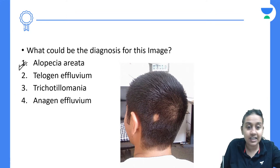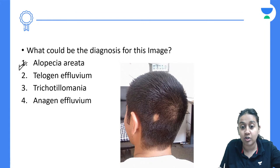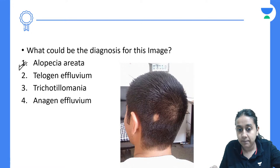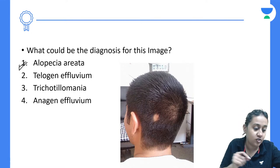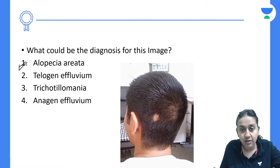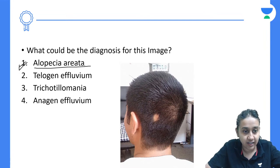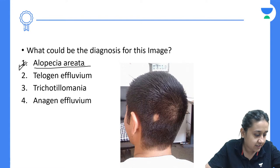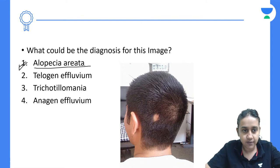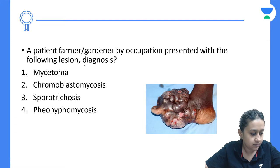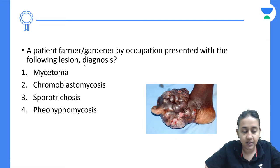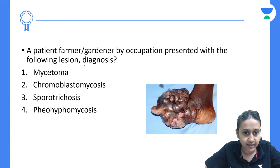In tinea capitis, which is a fungal infection of the scalp, you will see redness and scaling — smooth skin is not present. Here the smooth skin confirms alopecia areata. The treatment of alopecia areata is intralesional steroids.